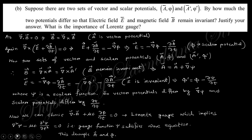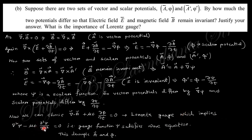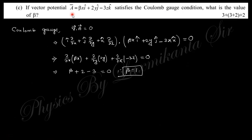Changing the index: A' = A + ∇ψ, where ψ is a scalar function. So the vector potential differs by ∇ψ and the scalar potential differs by −∂ψ/∂t. If you choose the Lorentz gauge condition — divergence of A + (1/c²)∂φ/∂t = 0 — this implies the gauge function ψ satisfies the wave equation. This decouples the vector potential A from the scalar potential φ.